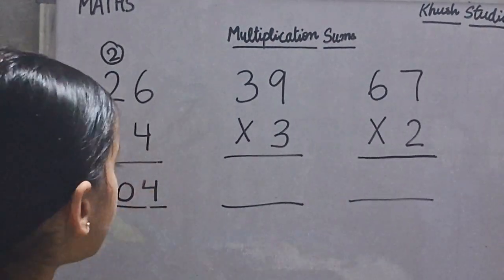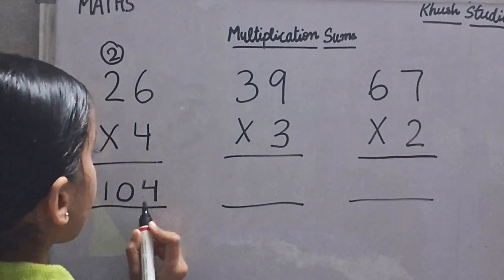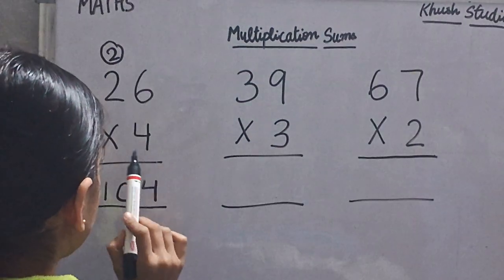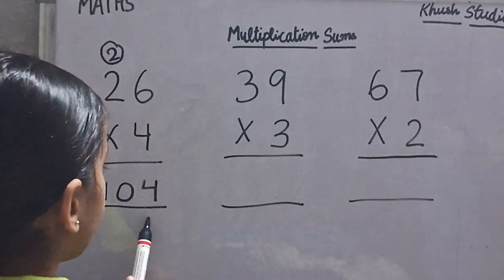So the answer is 104. 26 multiply by 4 is 104.